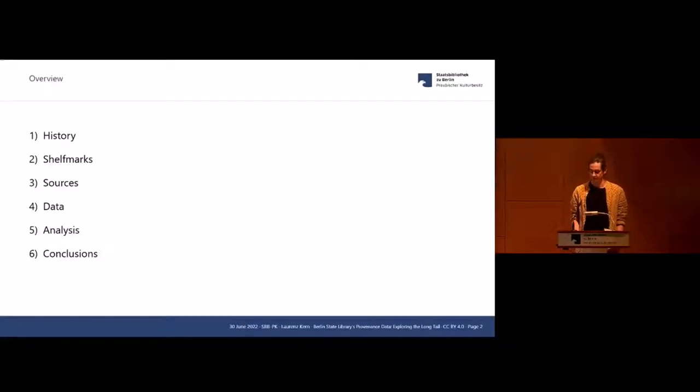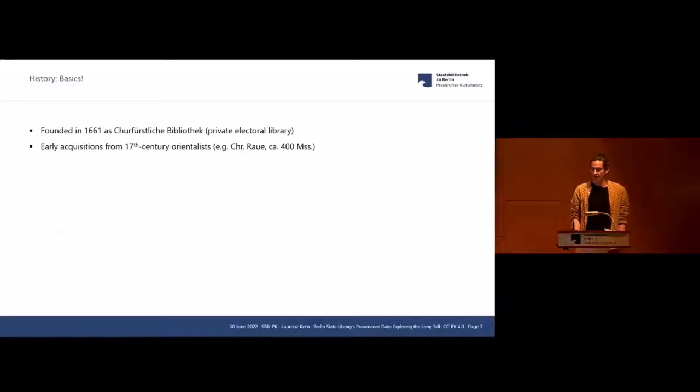Founded 1661 as the Kurfürstliche Bibliothek, the private electoral library. What's interesting is already in the very first stages of this institution there were already some oriental manuscripts with the holdings, probably in the very first core of the collection. But for sure before 1700 the library acquired a number of manuscripts from early European orientalists such as Christian Raue, 400 items in this case. 18th century not much happened, but in the 19th and 20th centuries the most intensive phase of acquisition started.